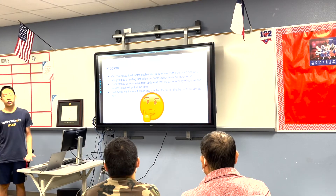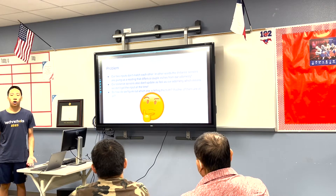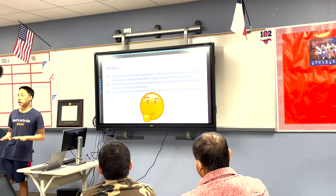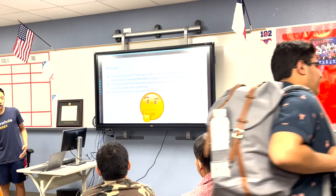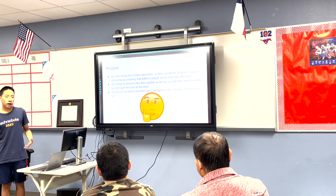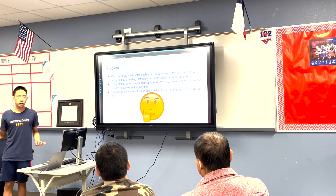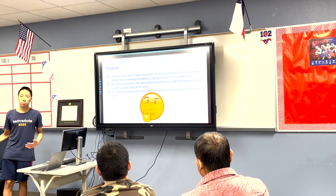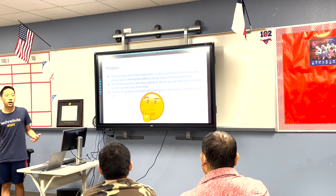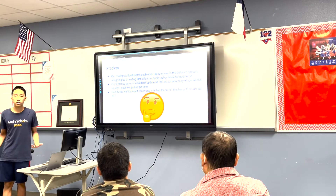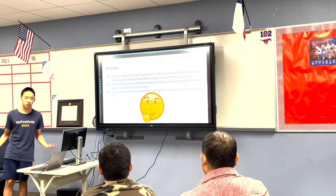But we have another problem. Our two inputs don't match each other. Our encoders say we're at 61, 62, but our distance sensors say we're actually at 50, 50. So how do we know which one to trust?